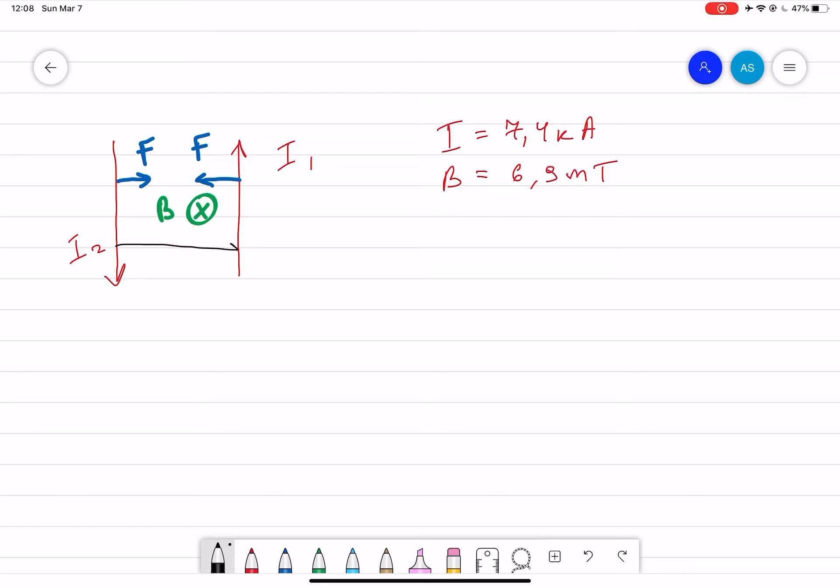the distance between these two wires. Now simply if you try to find B₁ which is equal to μ₀I₁ divided by 2πd, and since we know that current I₁ is equal to current I₂